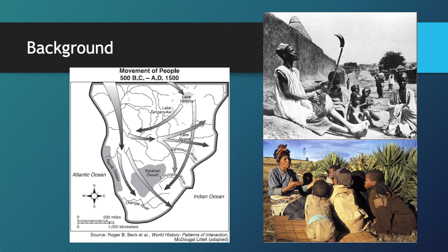I want to start with a little bit of background to the history of sub-Saharan Africa. Between 500 BC and about 1500, there was a migration of people known as the Bantu speakers. The Bantu-speaking people migrated from West Africa down throughout sub-Saharan Africa, eventually making it out to the East Coast. As the Bantus migrated, they spread agriculture, ironwork, and some kind of common culture. A lot of the culture throughout sub-Saharan Africa is very diverse, but there are some ties to these Bantu migrations.